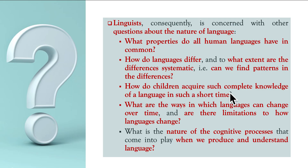How do children acquire such complete knowledge of a language in such a short time? When a child is born and reaches the age of four or five, they start speaking a language. How do children acquire such a vast and complete knowledge, and begin to speak in just three to four years? How does it happen, and what are the mechanisms? These are things we study in the subject of linguistics.